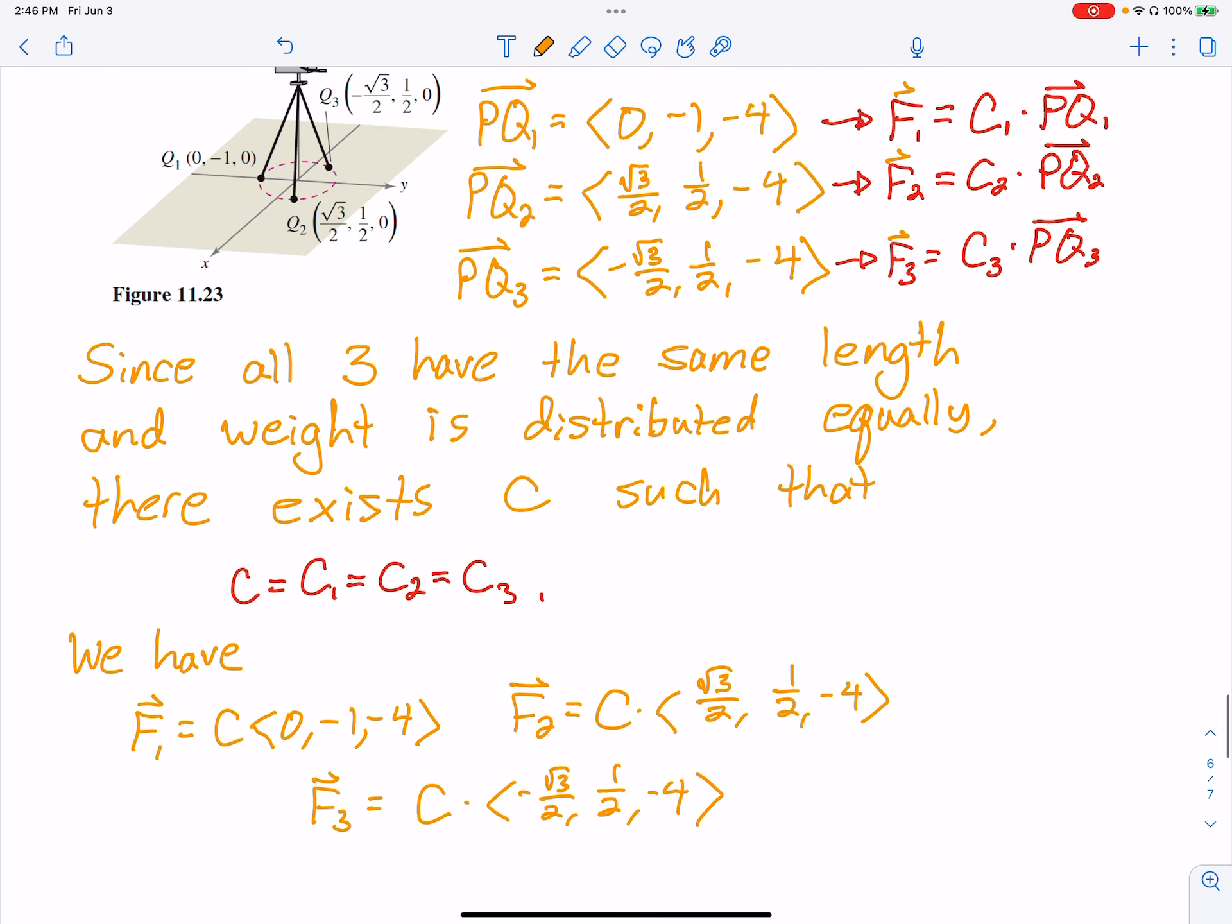The PQs up there above, those were not the force. Those were the directions. So to get the actual force in a direction, we just take that force, whatever it may be—the C1, 2, 3—multiply in the direction. But since they're a tripod, and they're all being equally distributed, and they have the same length, then we know that all three of those Cs—1, 2, and 3—are the same.